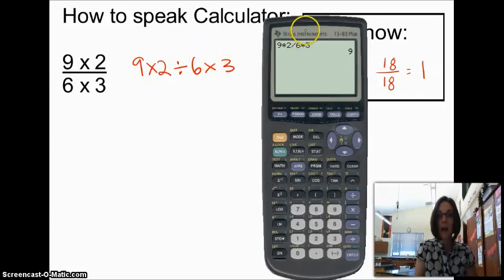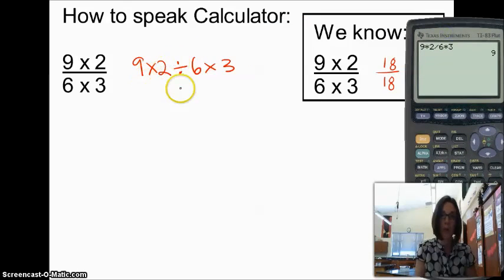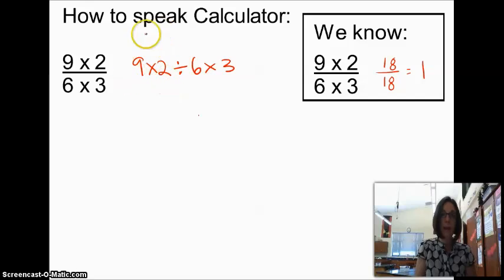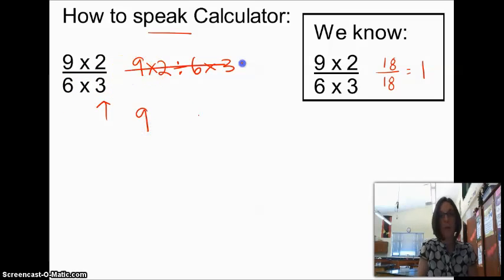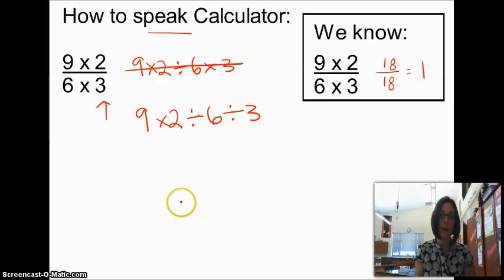So we didn't tell the calculator what we had in our problem right here. We need to be able to speak calculator and tell it that this 3 is not up on top being multiplied. That's in the denominator, and we're dividing. So instead, we should say, well, that's wrong. We should do 9 times 2. We're dividing by 6, but that 3 is also in the denominator, so we are also dividing by 3.